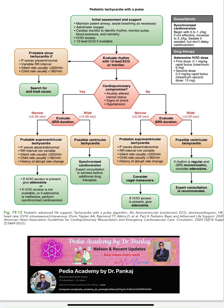If the patient is unstable and QRS is wide, this is possible ventricular tachycardia requiring synchronized cardioversion. The synchronized cardioversion dose is 0.5 to 1 joule per kg initially, increasing to 2 joules per kg. Adenosine dosing: first bolus is 0.1 mg/kg (maximum 6 mg); second bolus is 0.2 mg/kg (maximum 12 mg).